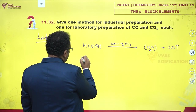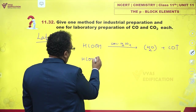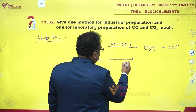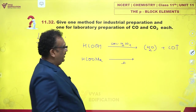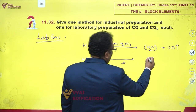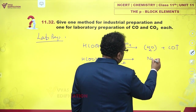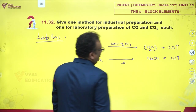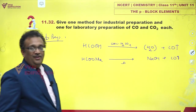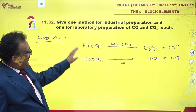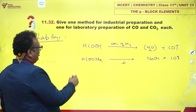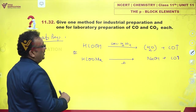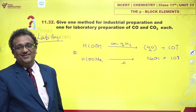Another method is you take HCOONa and you just heat it. You find you are left with NaOH and it gives away CO. Both of these are laboratory methods for obtaining carbon monoxide.